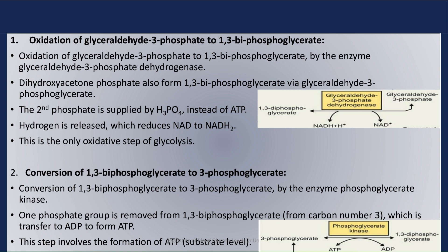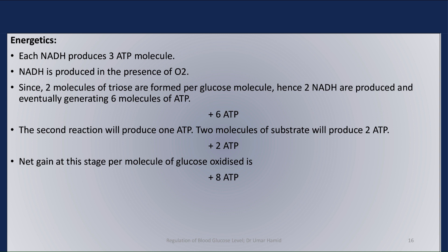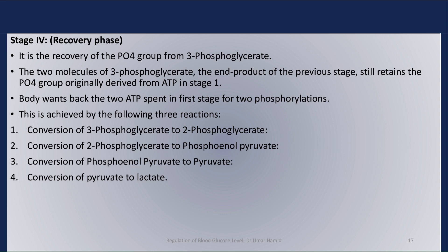At this stage of glycolysis, each NADH produces three ATP molecules. NADH is produced in the presence of oxygen. Since two molecules of triose are formed per glucose molecule, two NADH are produced, eventually generating six molecules of ATP. The second reaction produces two ATP from two substrate molecules. The net gain at this stage per molecule of glucose oxidized is eight ATP molecules.